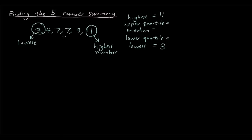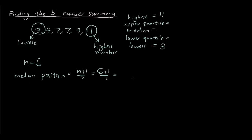And now what we're going to do is find the median. If you have watched the previous video, we know that we have six numbers here. So the median position is n plus one over two, which is six plus one over two, which is three point five. So our median occurs at position three point five — here is our median. Halfway between seven and seven is just going to be seven. So our median is seven.